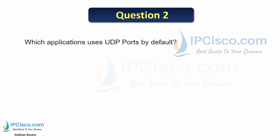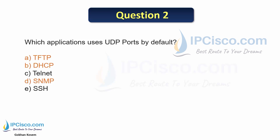Question 2: Which applications use UDP ports by default? The options are TFTP, DHCP, Telnet, SNMP, and SSH. The answer is TFTP, DHCP, and SNMP use UDP ports.